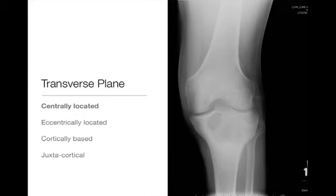What we mean by transverse plane is whether the lesion is centrally located, as in this case where we see this lesion centered in the proximal tibia, whether the lesion is eccentrically located, whether it's cortically based, or whether it's juxtacortical.